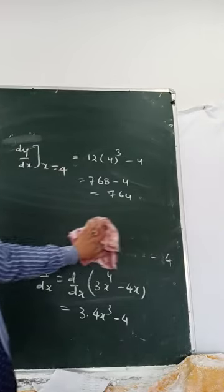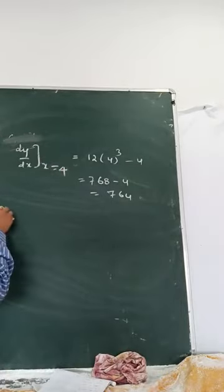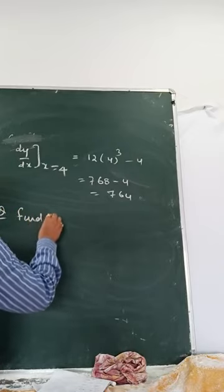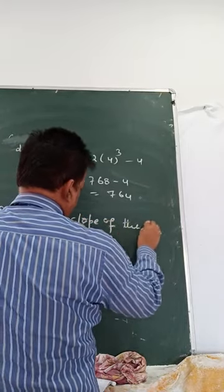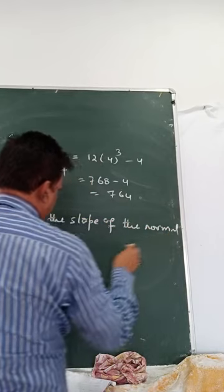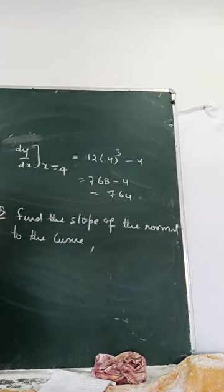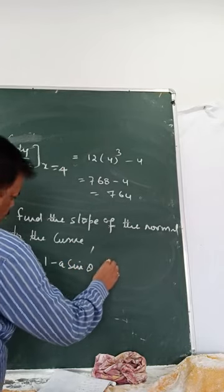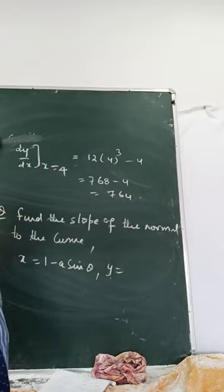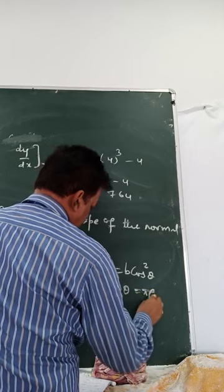Next question: Find the slope of the normal to the curve given in parametric form. That is, x equals 1 minus a sine theta, y equals b cos squared theta, and theta equals pi by 2.